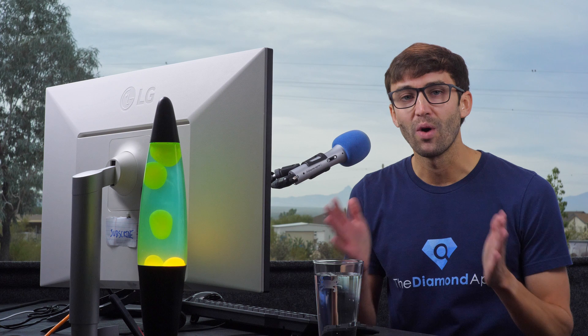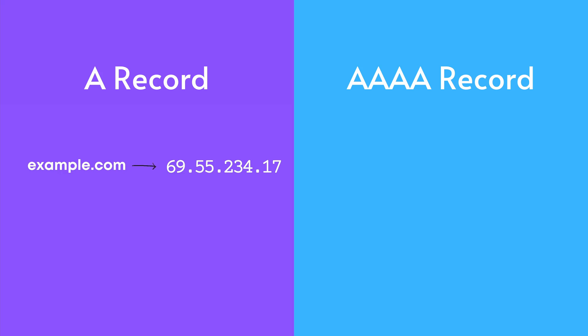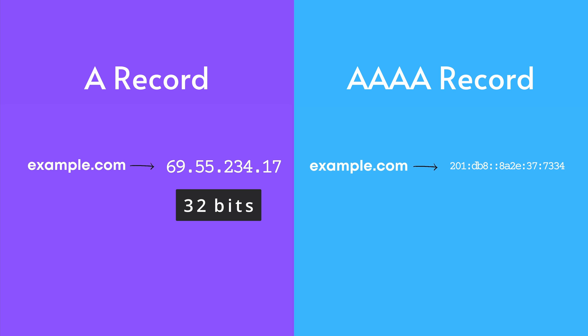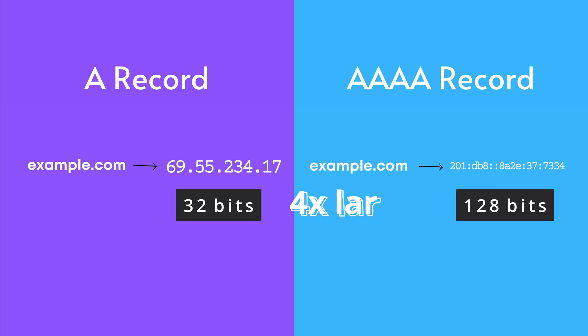You're probably wondering why they're called Quad A records in the first place. Like we talked about before, A records are 32 bits in size, whereas Quad A records are 128 bits in size, which kind of, sort of, but not really makes them four times larger than A records — hence the four A's.